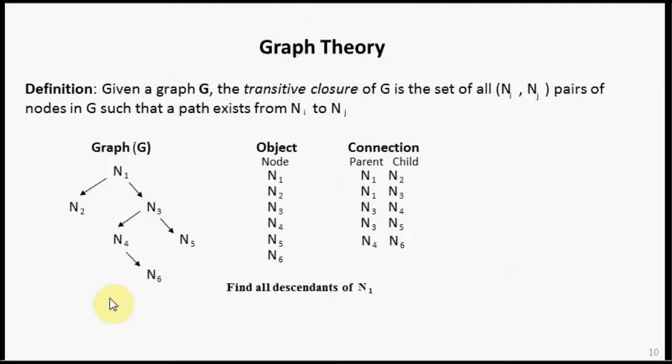The notion of transitive closure is a concept that is foreign to most people. So let's look at a definition of transitive closure. Given the graph G, the transitive closure of a graph is the set of all potential paths between all nodes in the graph here.